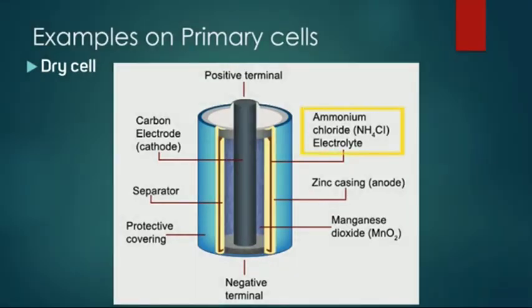Ammonium chloride is the electrolyte used in this type of battery. Just ahead of the electrolyte lies a manganese dioxide separated from the electrolyte by a separator.